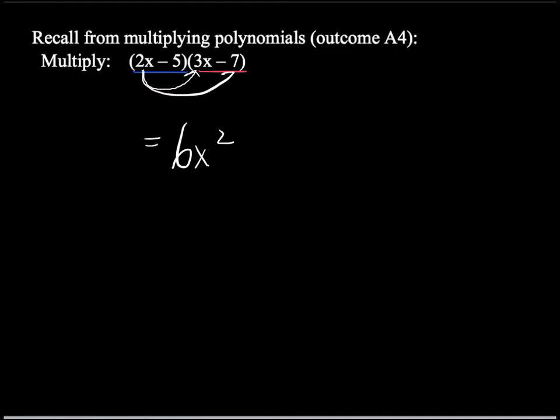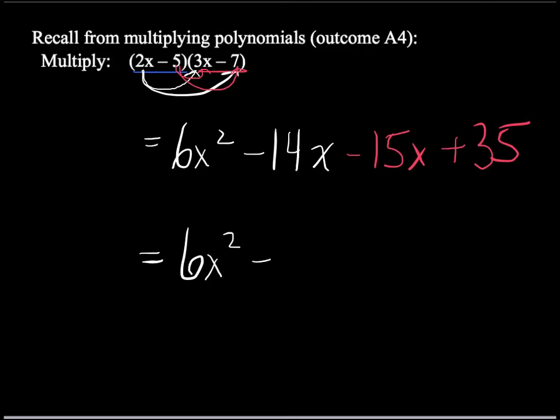2x times -7, which is -14x, and then we multiply -5 times 3x, which is -15x, and -5 times -7, which is +35. If we add it all together now, we get 6x² - 29x + 35.